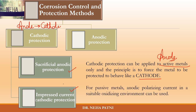In anodic protection, that is basically for passive metals. They are still anode and may get corroded, so what you do is use a polarizing current in order to make a suitable preventive oxide layer on the metal, so that you can utilize it in a suitable oxidizing environment. So let us go into detail about cathodic and anodic protection.